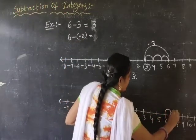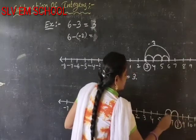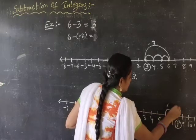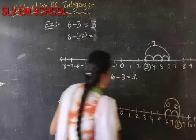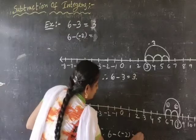2 steps right side. So the answer is 8. Move 2 steps to the right: 1, 2. Therefore, 6 minus minus 2 equals 8.